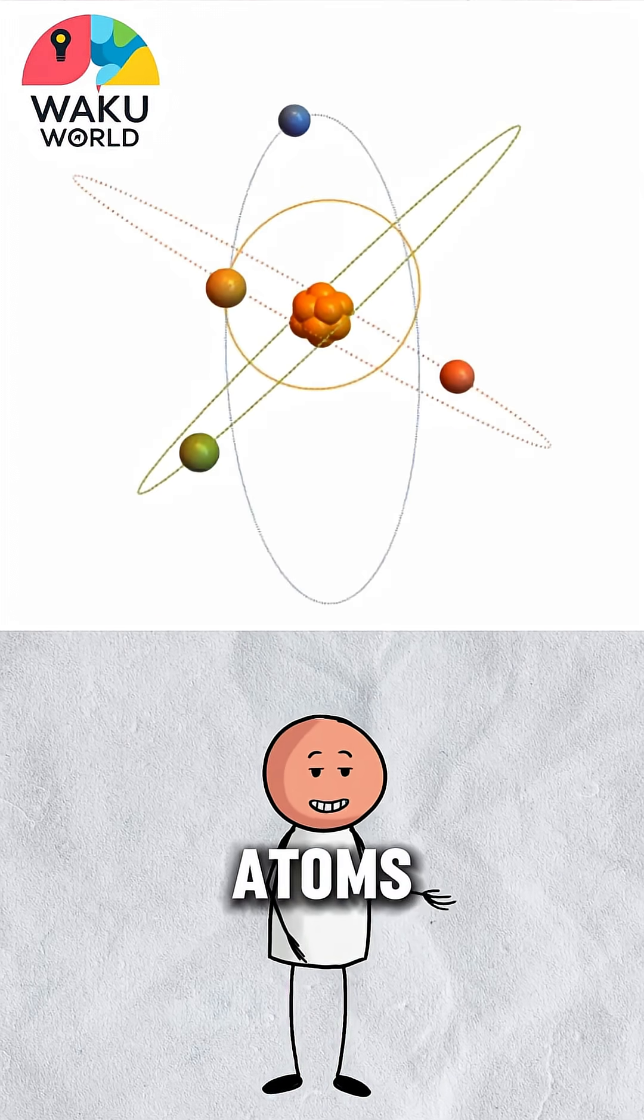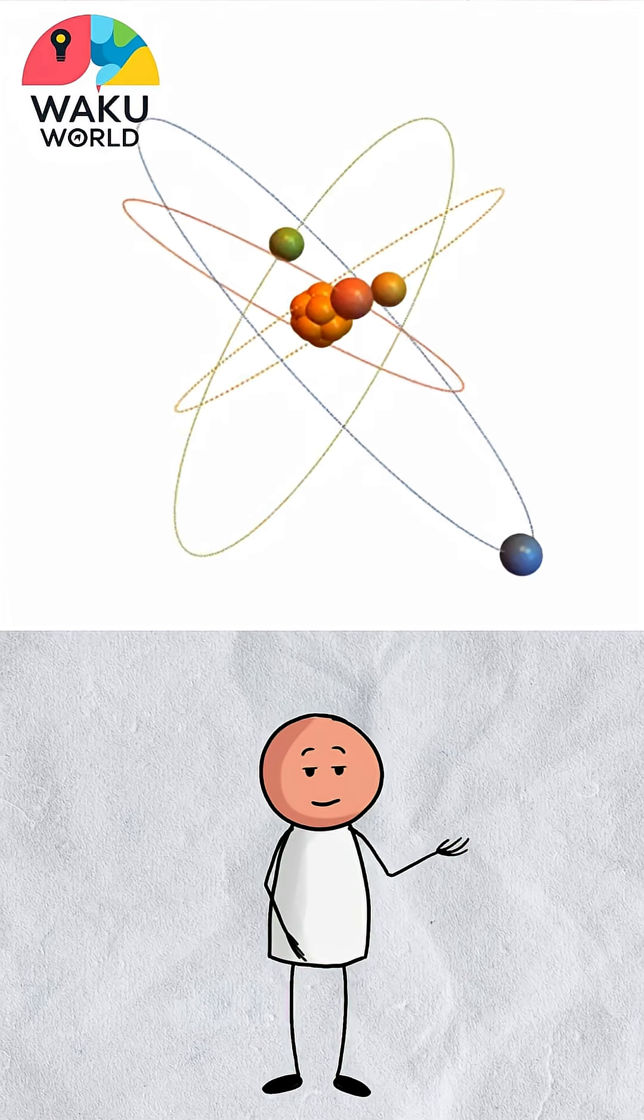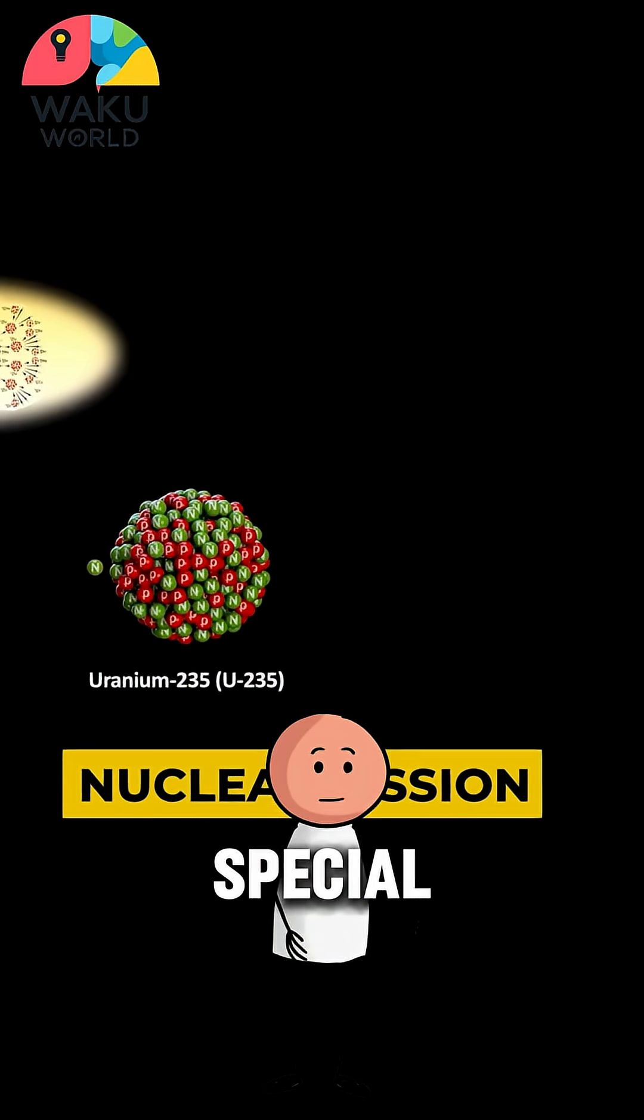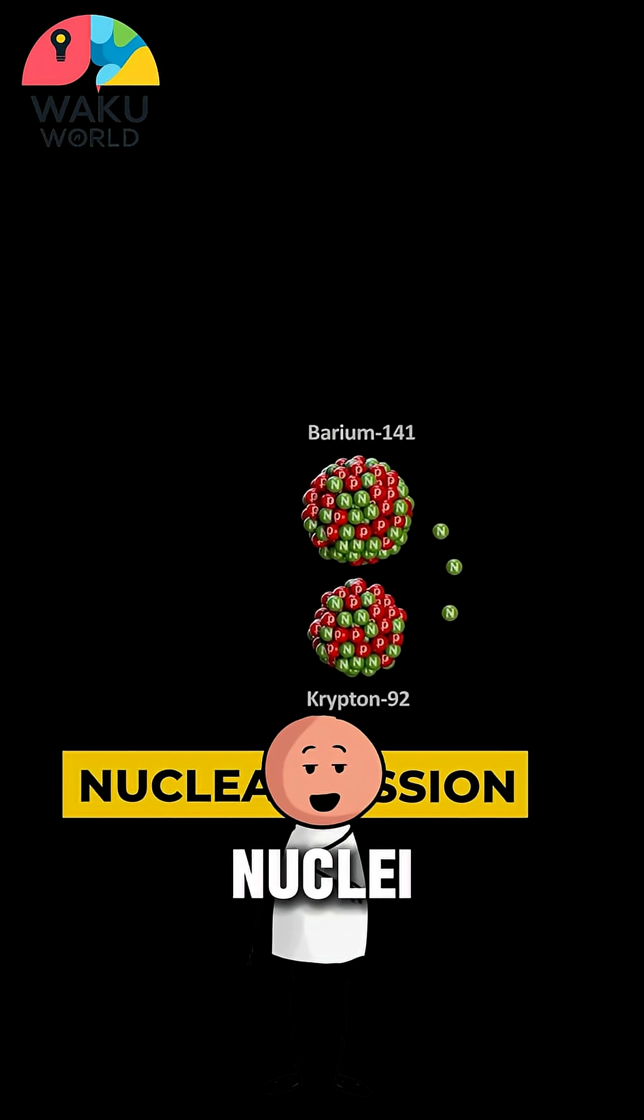In the middle of each atom there's a tiny core called the nucleus. In a nuclear bomb, scientists use special materials like uranium or plutonium and force the nuclei of these atoms to split apart. This is called fission.